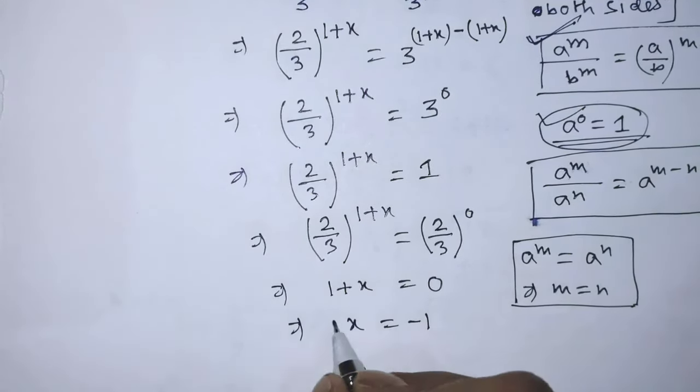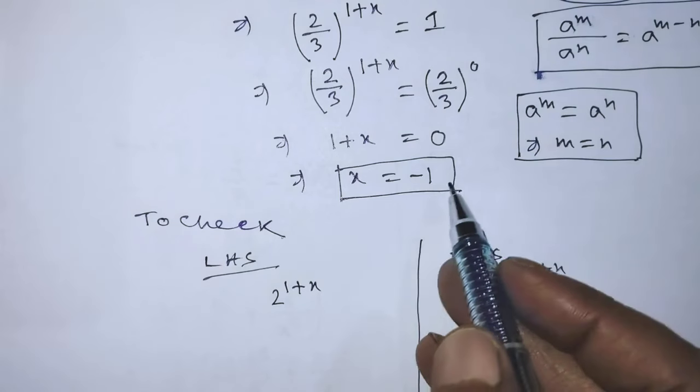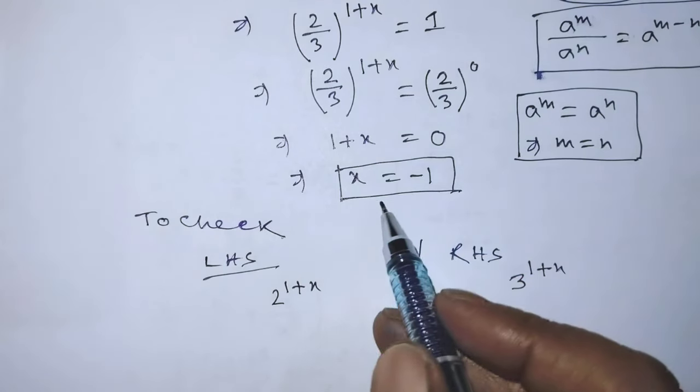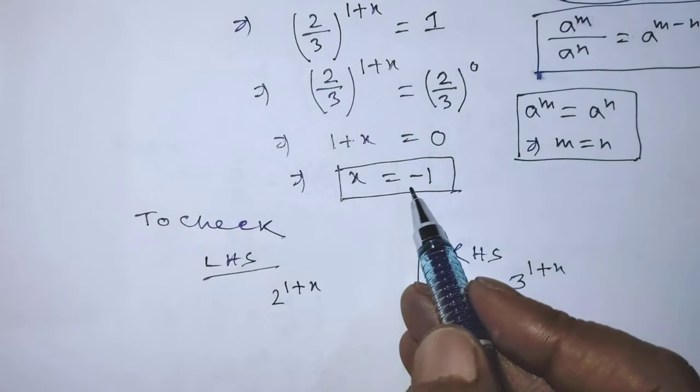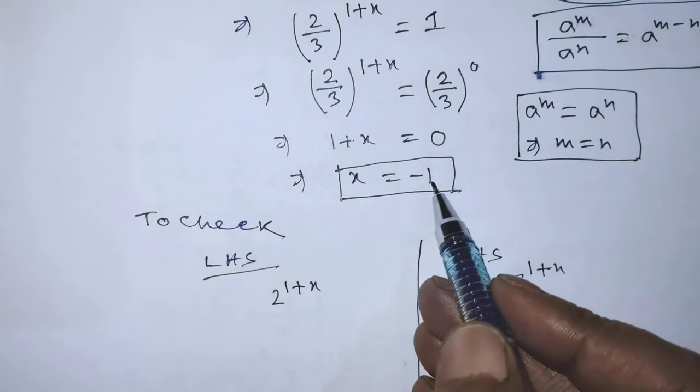So the value of x will be minus 1. To check this solution, we have to put the value of x equal to minus 1 on the left hand side and right hand side of the given equation.